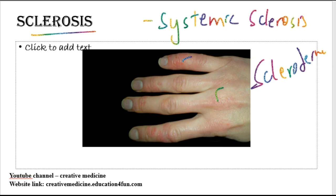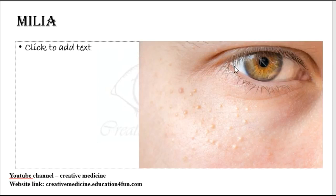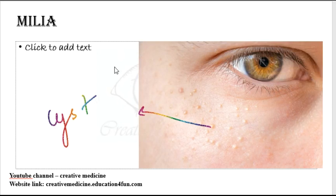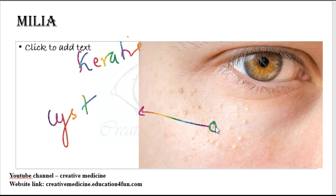Milia. Milia is a cyst which has lamellated keratin. Milia appears as pinpoint white lesions.